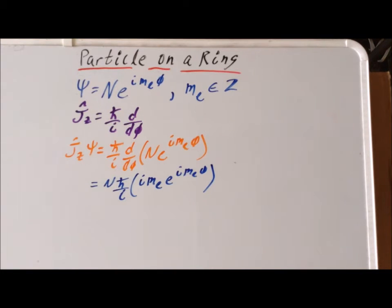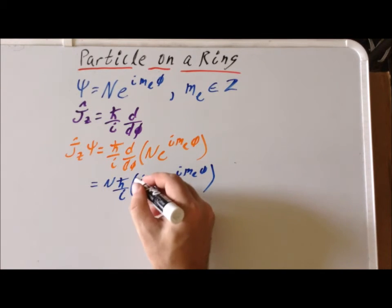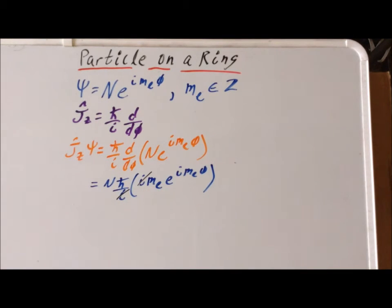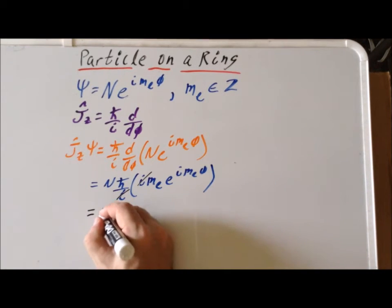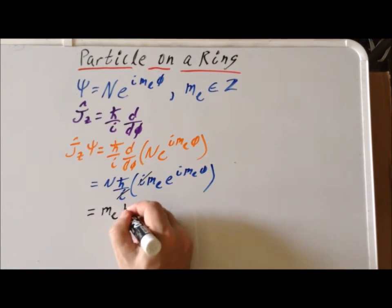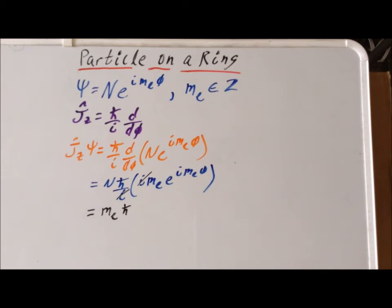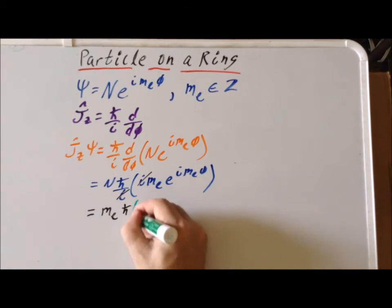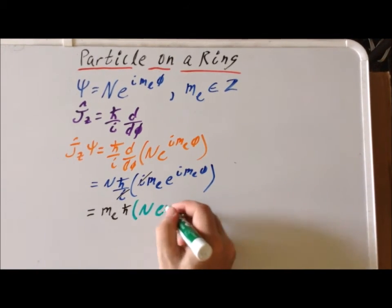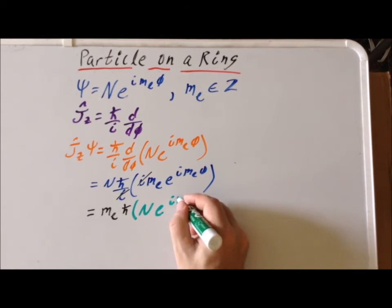And we notice that i's cancel i's, so i drop out there, and we're left with m sub l times h-bar all times n e to the i m sub l phi.